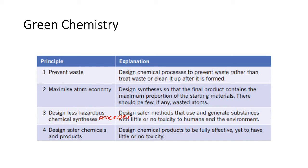So if you could create something that removes rust and it's not bad for the environment, that would be commercially valuable. Number four: design safer chemical products — create something that does the same thing but is less environmentally damaging.